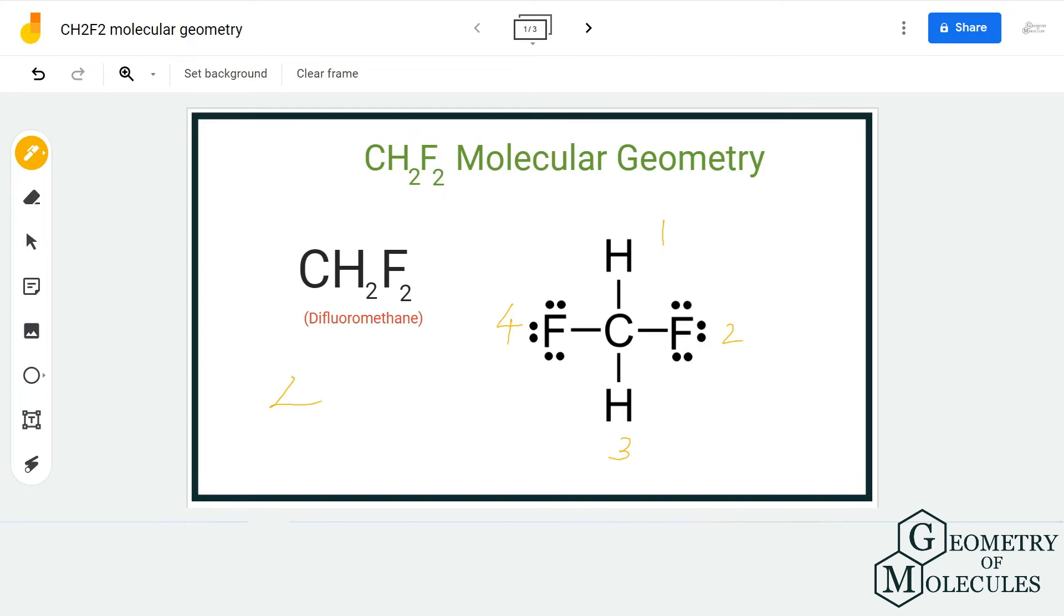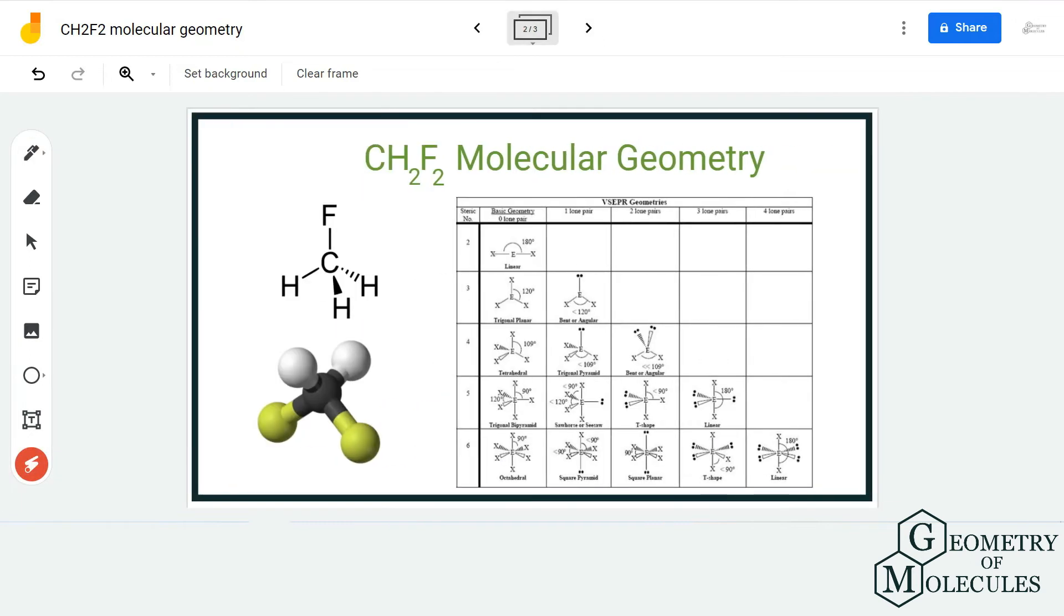Now referring to this table where it says steric number four with zero lone pairs, you can see the molecular geometry that corresponds to the steric number. Here it corresponds to tetrahedral, and that is true.